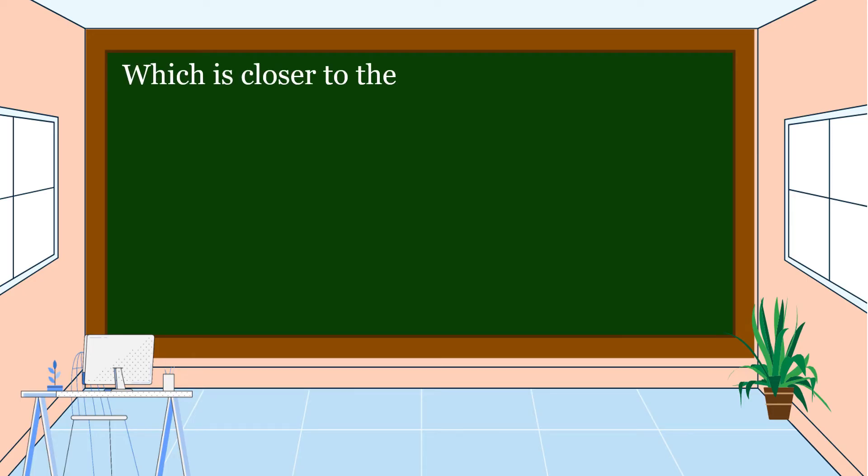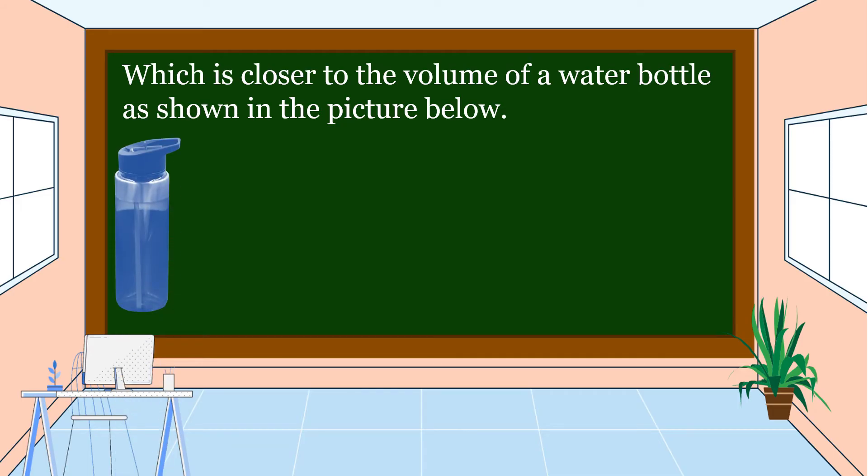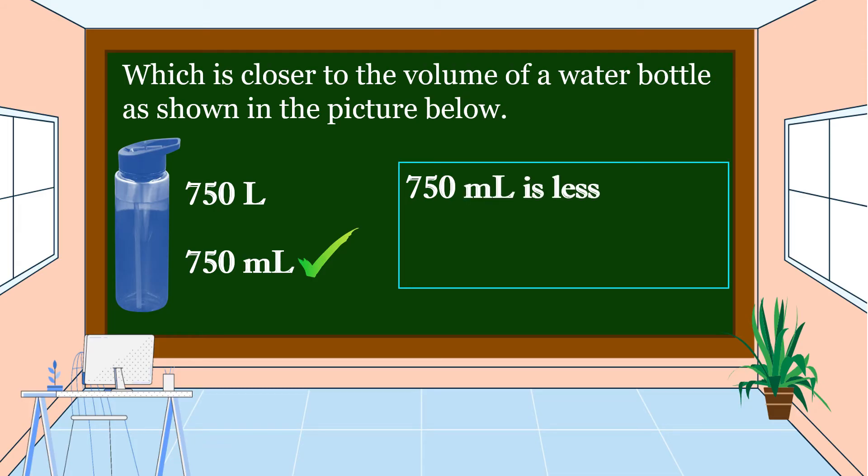Which is closer to the volume of a water bottle as shown in the picture below? Is it 750 liters or 750 milliliters? What is your answer? Yes, you are right. The answer is 750 milliliters. 750 milliliters is less than 1 liter, so it can fill in this water bottle.